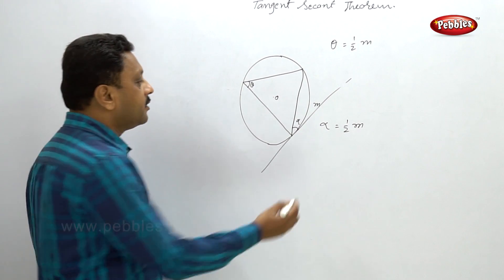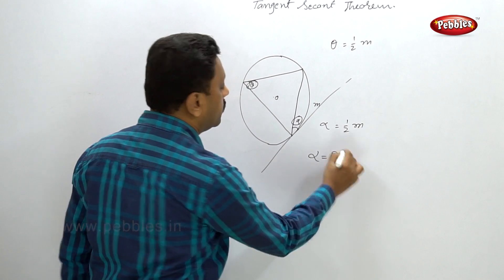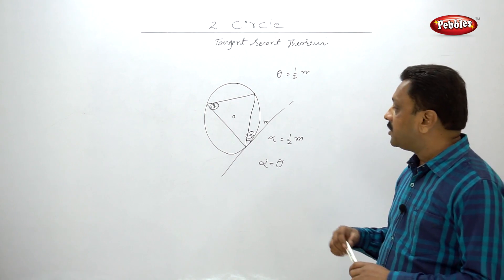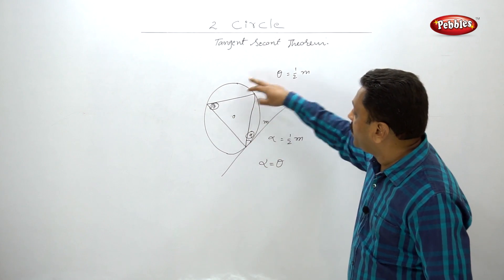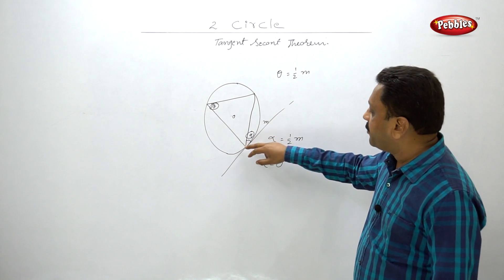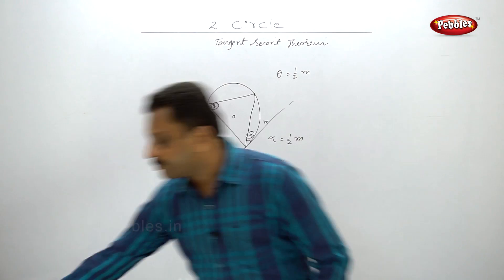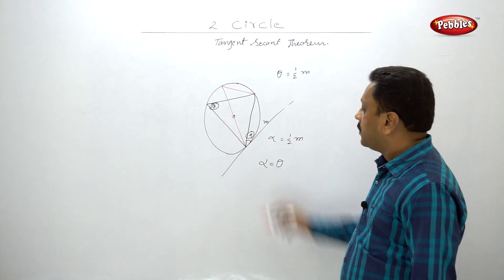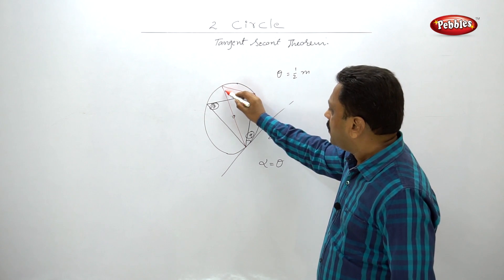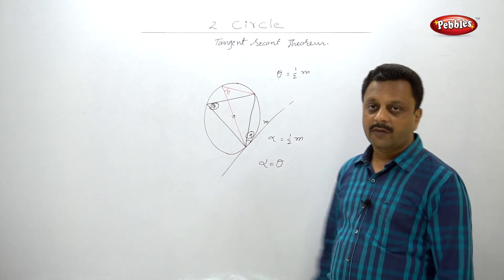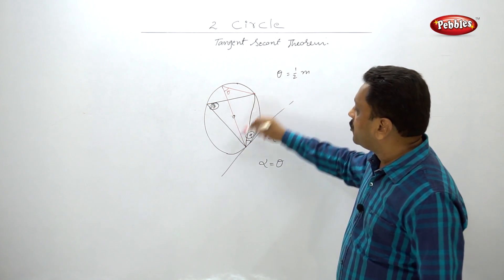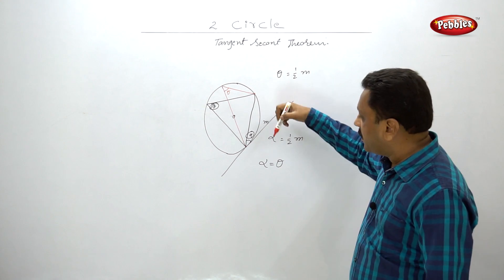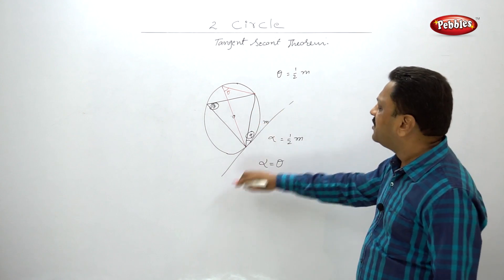Nothing difficult — alpha is equal to theta. That is what angles in alternate segments are. Suppose there are two other chords intercepting arc M. Those chords are also intercepting the same arc M, so since the arc is the same, the angle is the same. Now instead of two vertices on the circumference, one vertex is on the circumference and another arm of that angle is tangent to the circle — that's all.